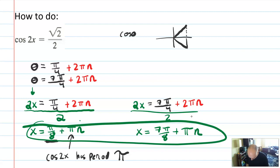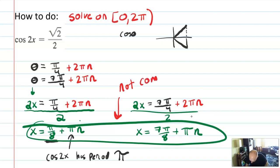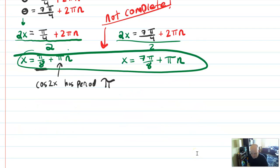Most of the time on these problems, you'll see the direction: solve on the interval 0 to 2π. So you don't have to write out every single solution — that would be silly. But also, the general form alone is not a complete solution. You have to continue listing out solutions until you've listed all of those on the target interval from 0 to 2π. The way we list those is by creating a table and plugging in different values of n.